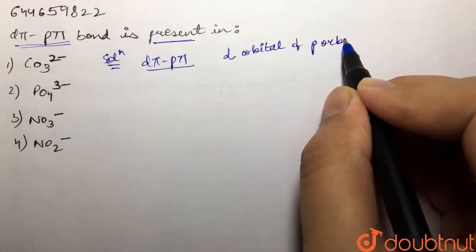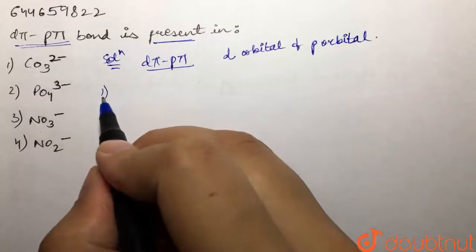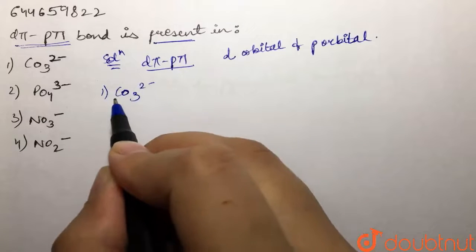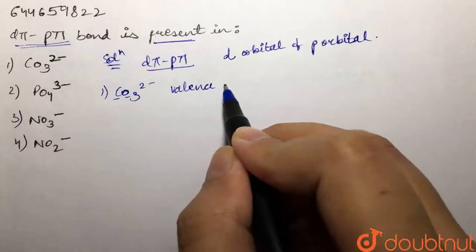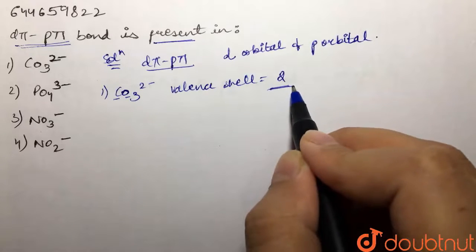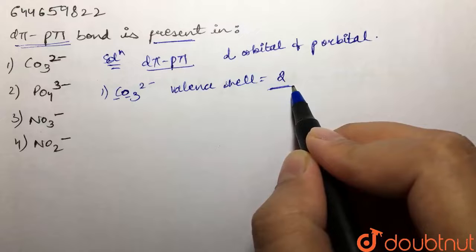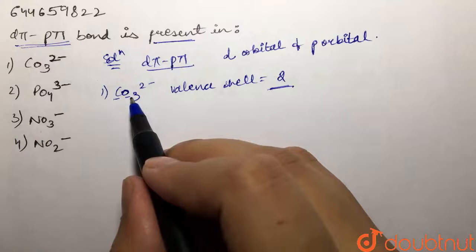If we look at our first option, we are given CO₃²⁻. Now, carbon and oxygen both belong to second period and their valence shell is second. For the second valence shell, we do not have any presence of d orbitals with them. Both of them do not have d orbitals, so they cannot form a d-pi p-pi bond. So this option gets cancelled.